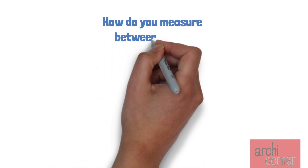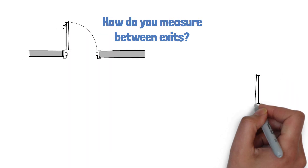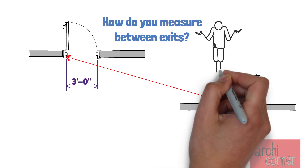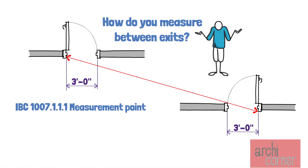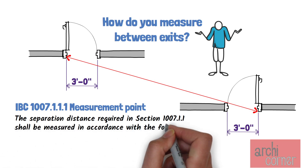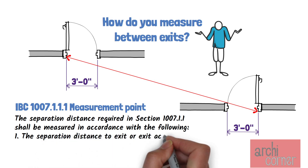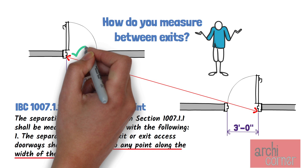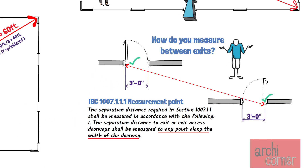The last item we need to cover is how do you measure between exits? So far we have simply shown an arrow pointing between doors. But most commercial doors are three feet wide, so there is a big difference between measuring at the closest portion versus the widest portion of the door width. IBC 1007.1.1.1 states: The separation distance required in section 1007.1.1 shall be measured to any point along the width of the doorway. So you can measure to whichever point provides you with the longest separation distance.